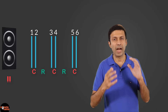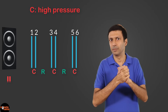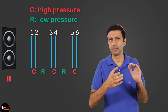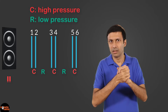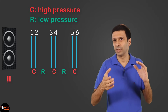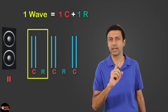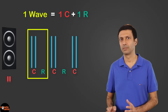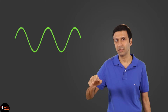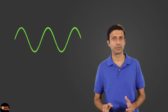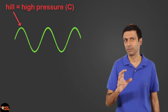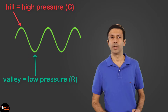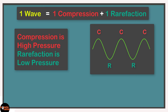A compression is a region of high pressure — you can see that I'm pressing my hands together here. A rarefaction is a region of low pressure — that's when I release my hands. So compression is high pressure and rarefaction is low pressure. One wave is defined as one compression and one rarefaction, or one region of high pressure and one region of low pressure. I'm sure you've seen this wave-like pattern in your textbooks — it looks like hills and valleys.